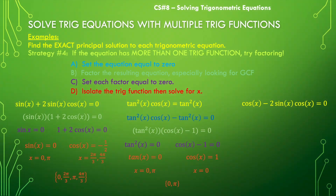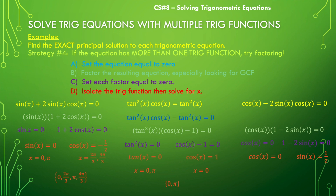For the last example, the GCF is cos x. Factoring it out gives cos x(1 − 2sin x) = 0. Setting each factor to zero: cos x = 0 at π/2 and 3π/2, and sin x = 1/2 at π/6 and 5π/6. The solution set is {π/2, 3π/2, π/6, 5π/6}.